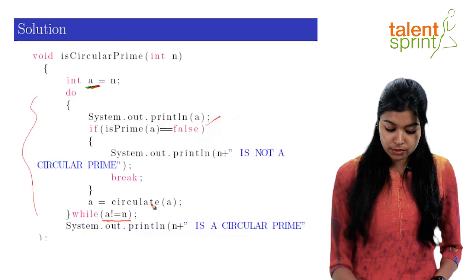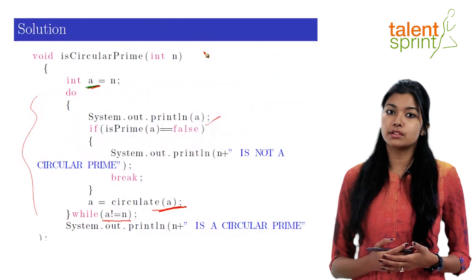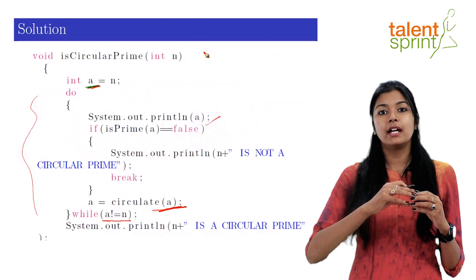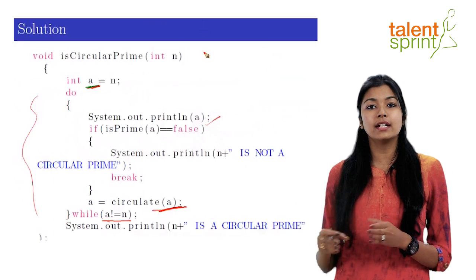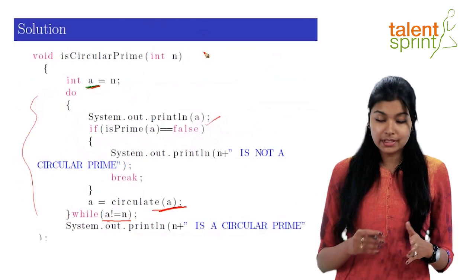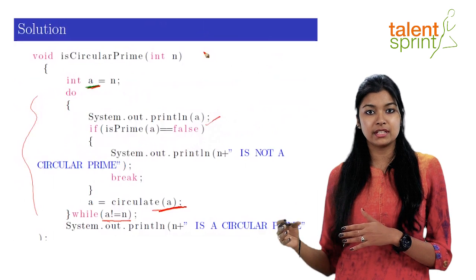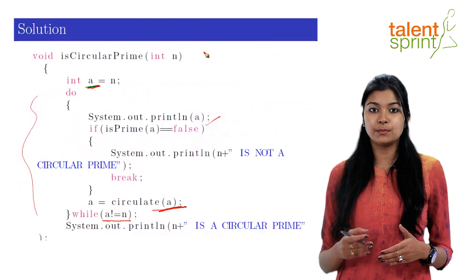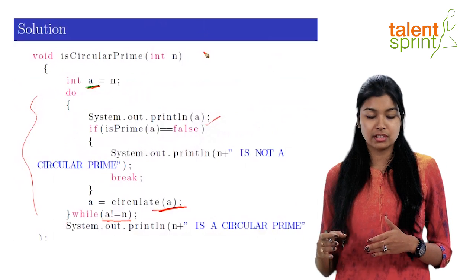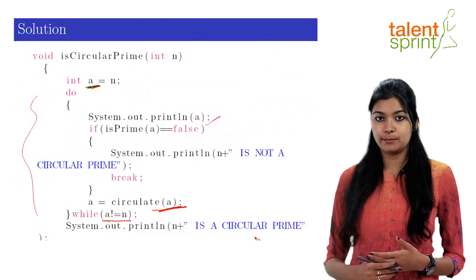But if a is a prime number, then we go on to circulate a. What this function circulate will do is it will just take the first number and move it to the end of the number, giving us the second number for our next iteration. So we continue this till we reach again the same number that we started with. And if we don't break at any point in this whole process, which means we reach back to the original number, we finally print out that n is a circular prime.